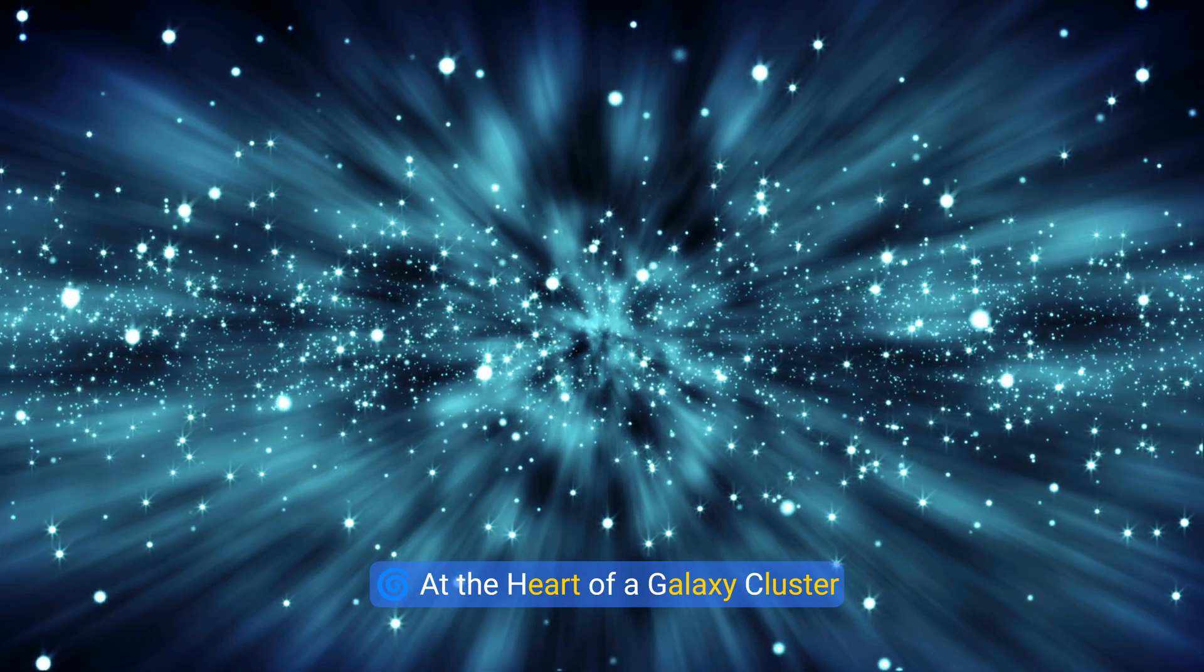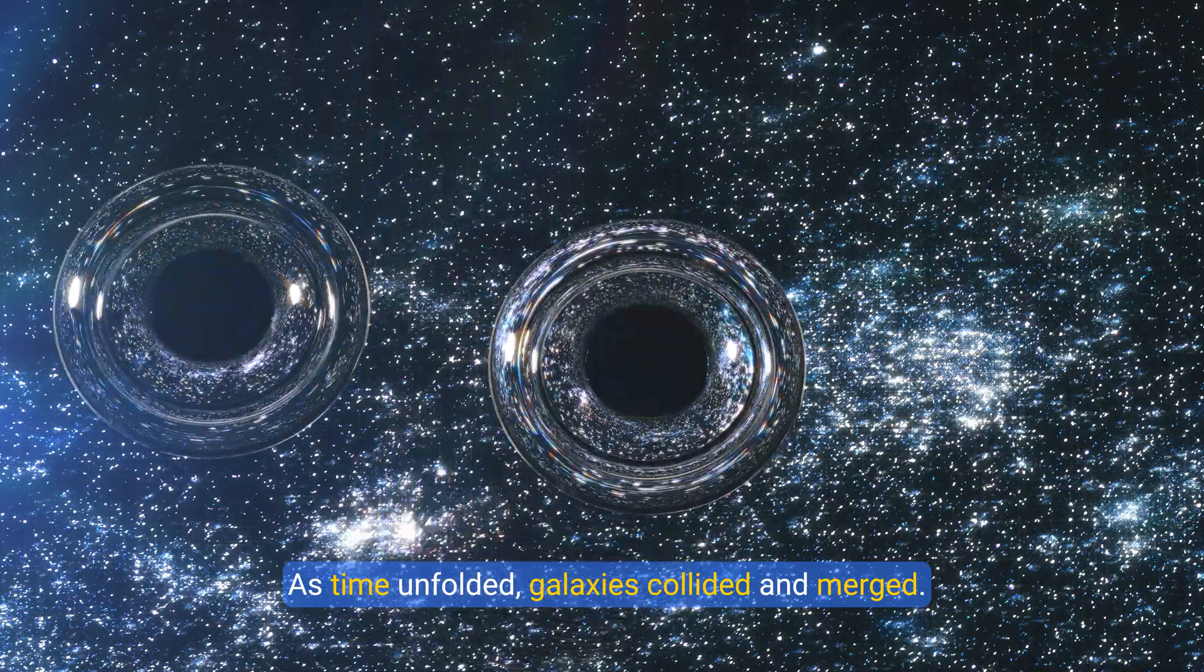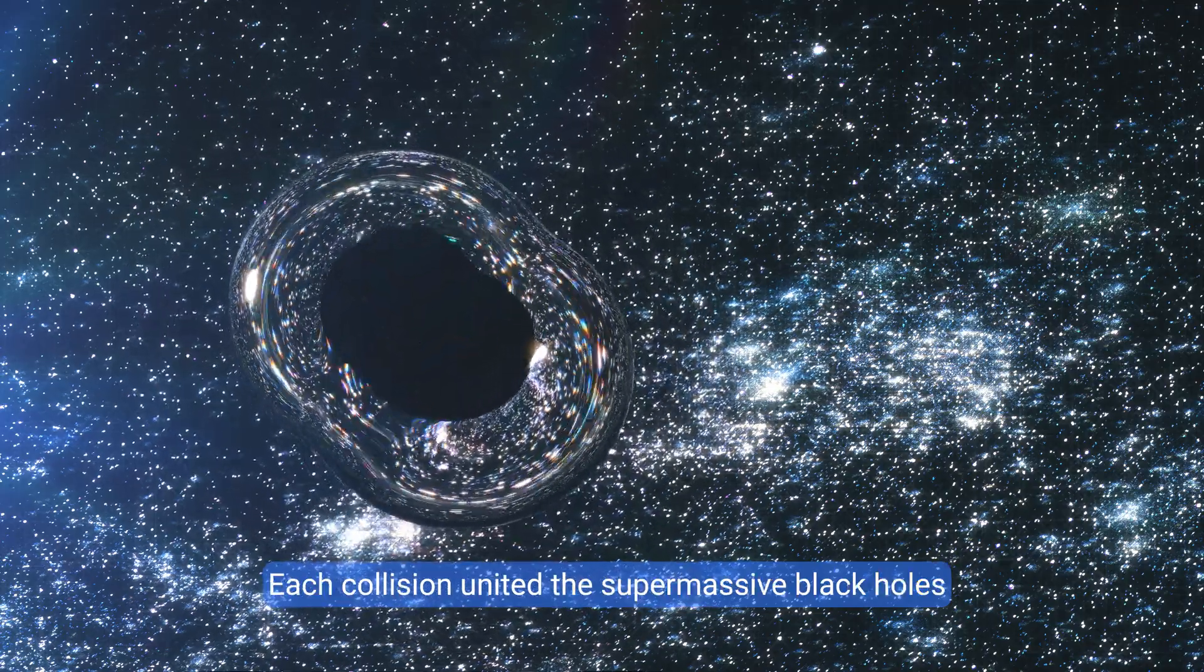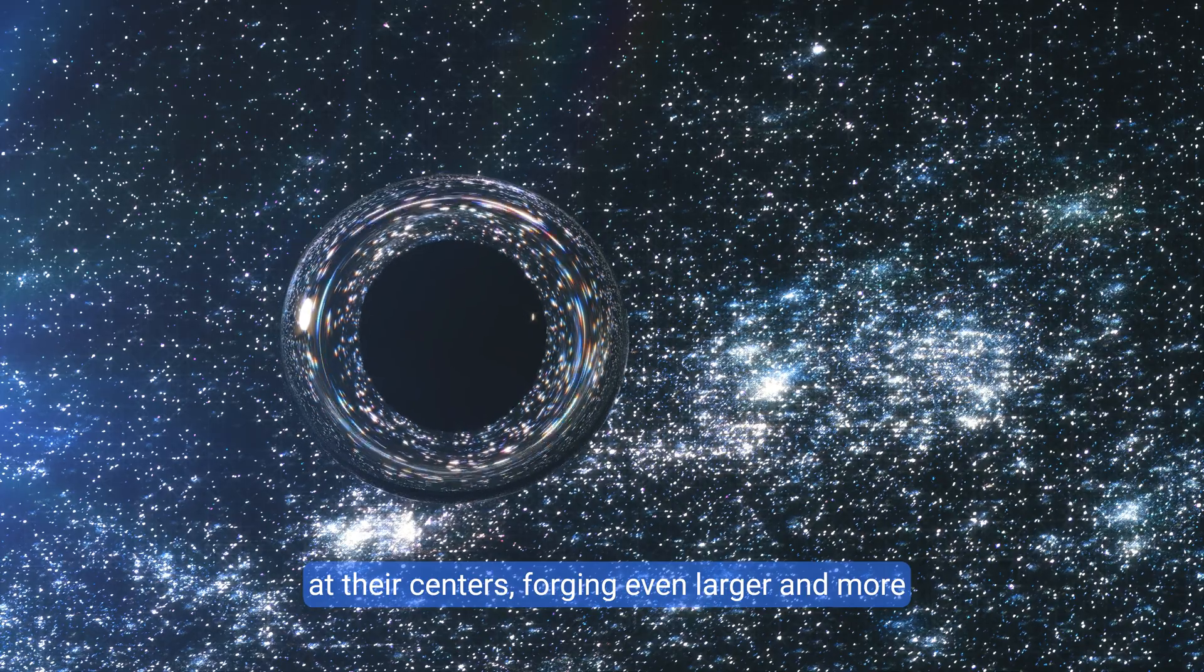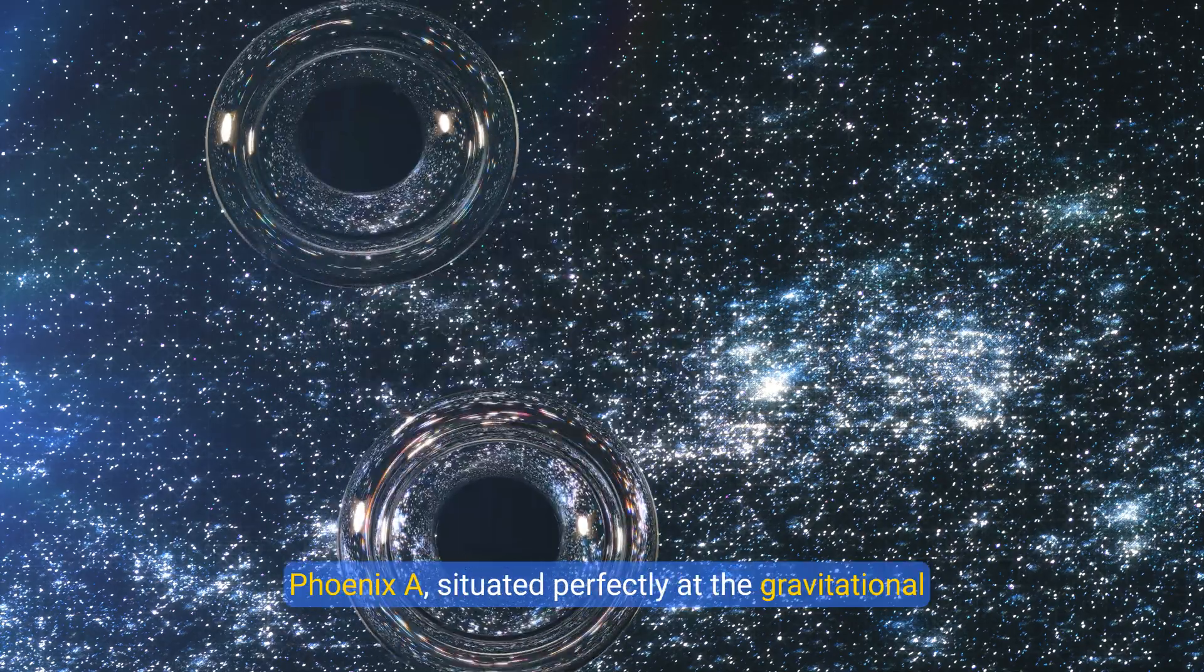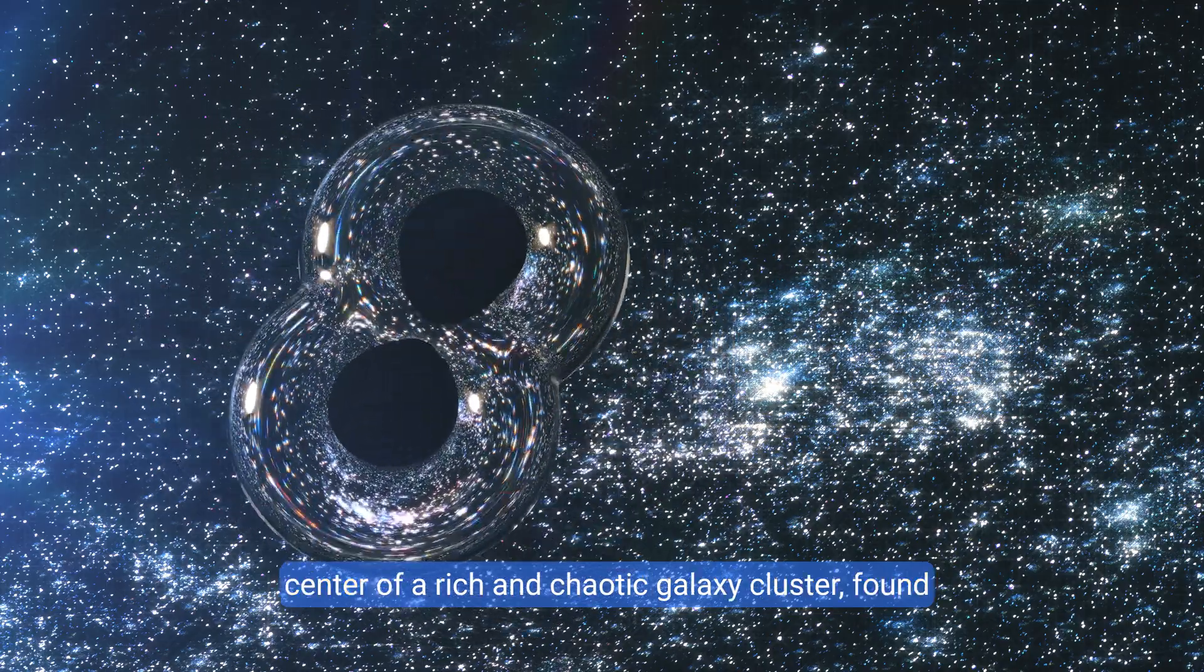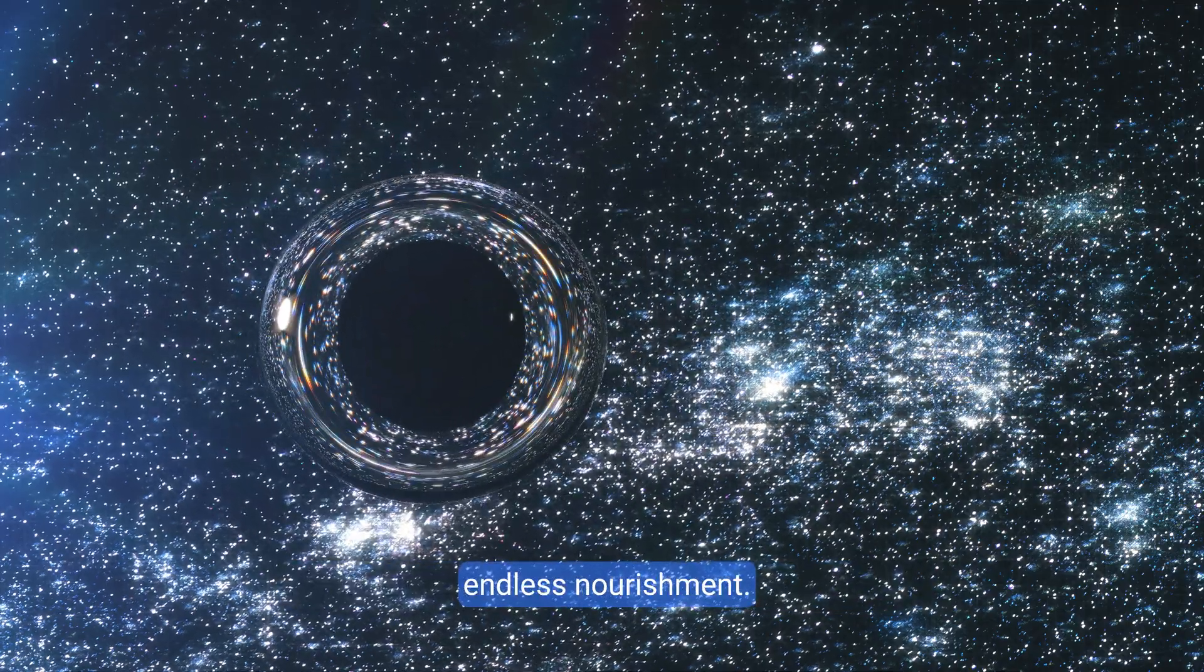At the heart of a galaxy cluster, as time unfolded, galaxies collided and merged. Each collision united the supermassive black holes at their centers, forging even larger and more powerful entities. Phoenix A, situated perfectly at the gravitational center of a rich and chaotic galaxy cluster, found endless nourishment.